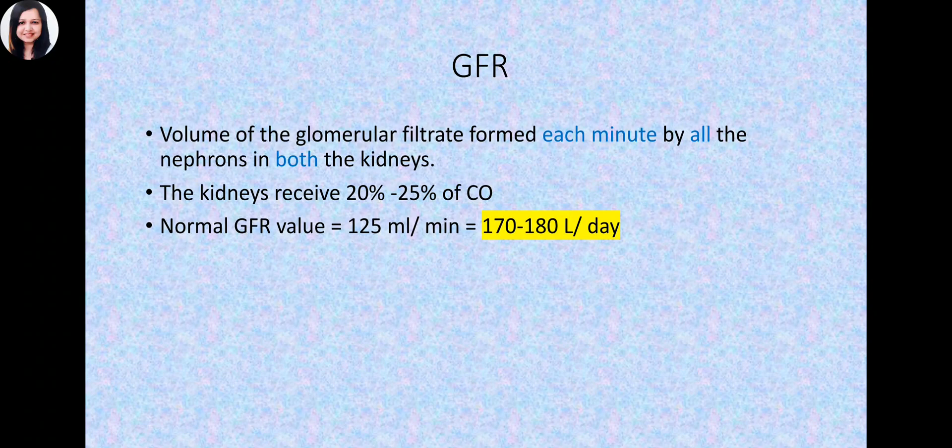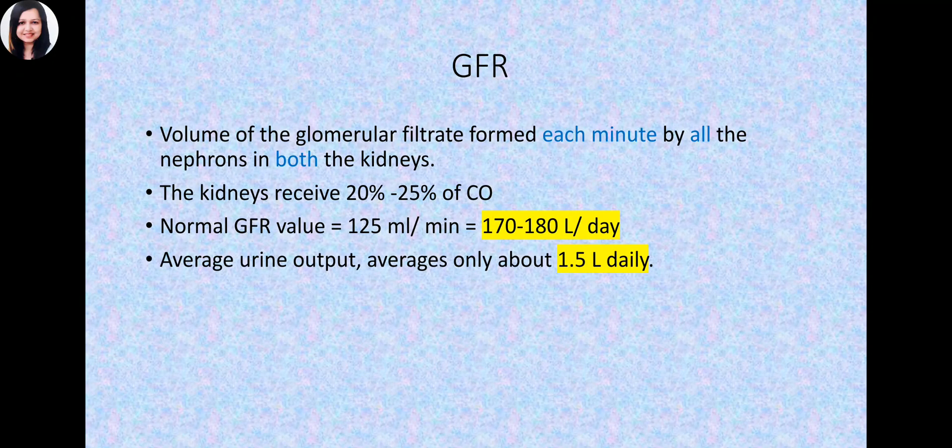What is a normal GFR? The glomerular filtrate formed from plasma per minute is 125 ml per minute. In one day (24 hours × 60 minutes), that comes to about 170 to 180 liters per day, combined for both kidneys. But the average urine output is just 1.5 liters — so what happens to the rest of the filtrate? Of course, it is being reabsorbed back into the body.